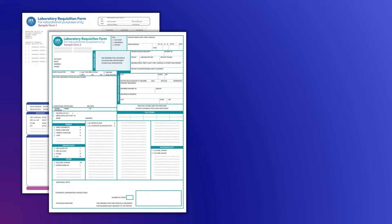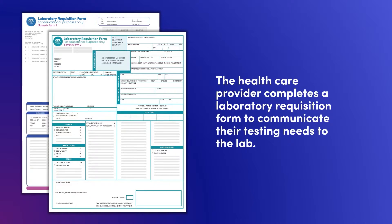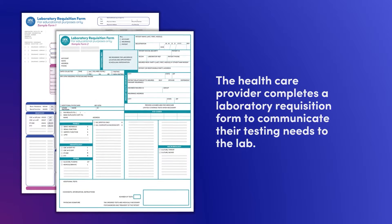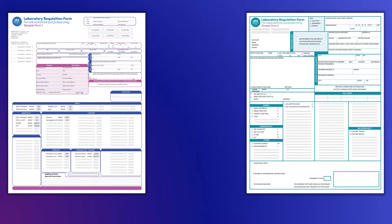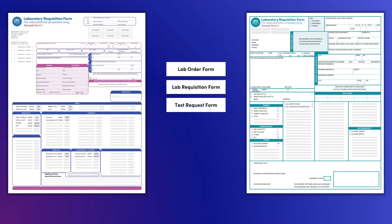Once the patient's specimens are ready to go to the lab for testing, the health care provider completes a laboratory requisition form to communicate their testing needs to the lab. The name and design of the form may vary depending on the medical facility and laboratory. For example, a laboratory requisition form may also be referred to as a lab order form, lab requisition form, or test request form.